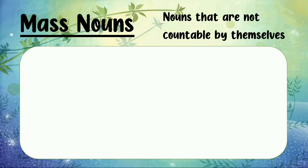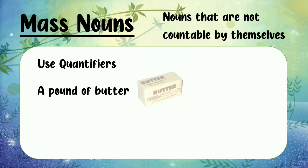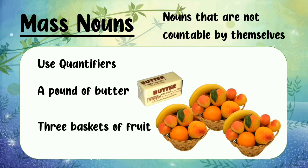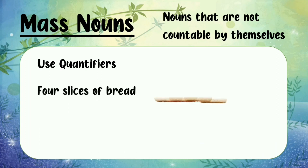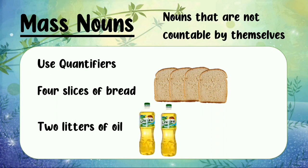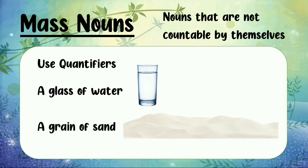In order to count mass nouns, you must use amount words or quantifiers. Some examples are: a pound of butter, three baskets of fruit, four slices of bread, two liters of oil, a glass of water, and a grain of sand.